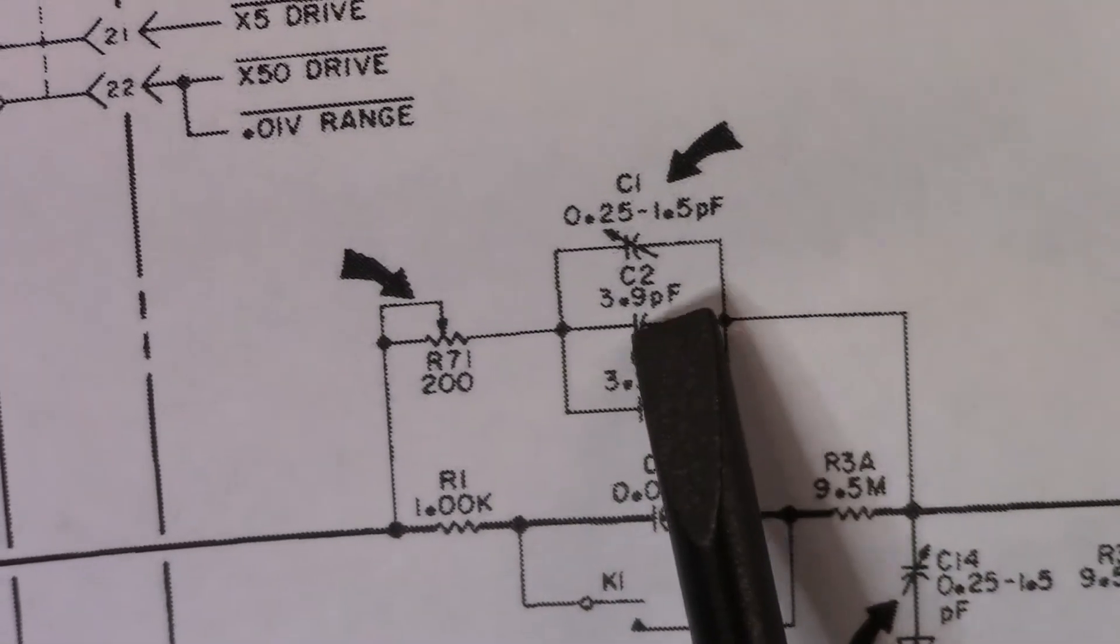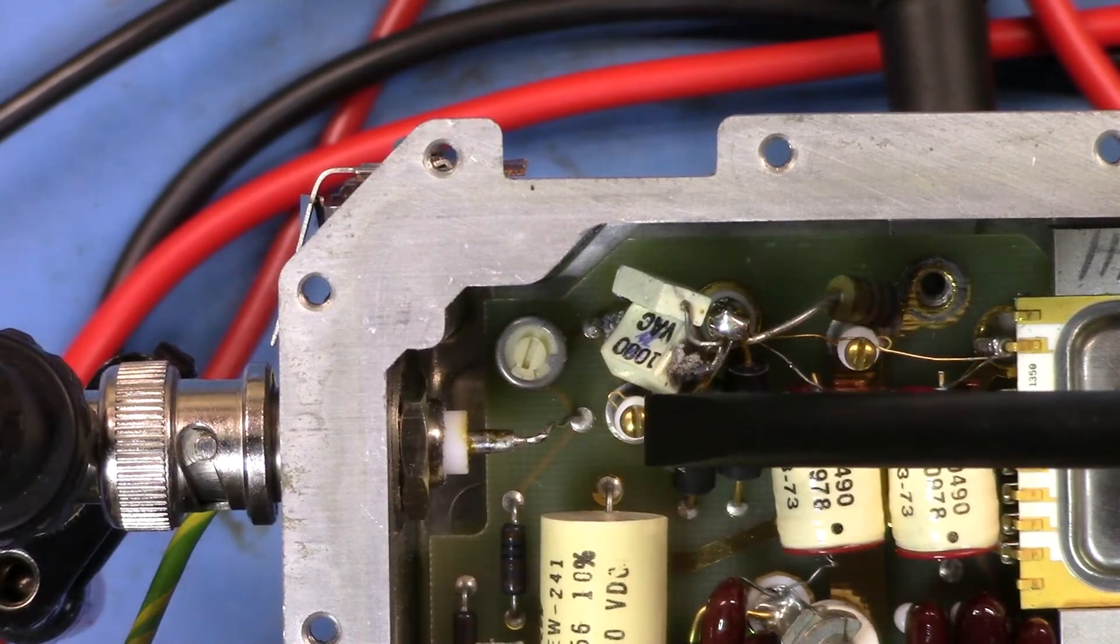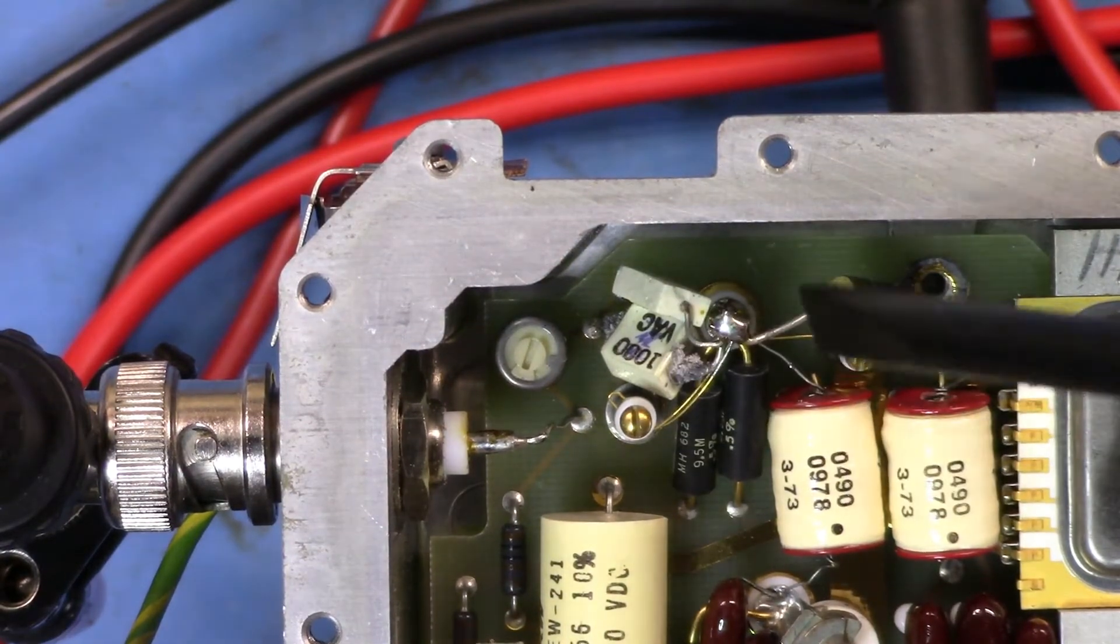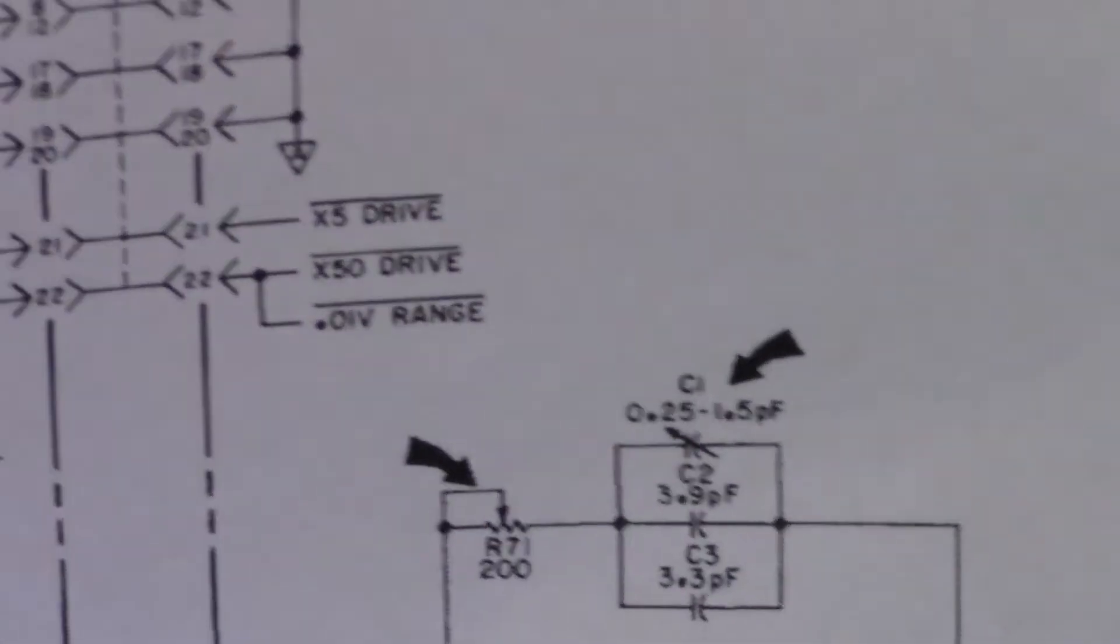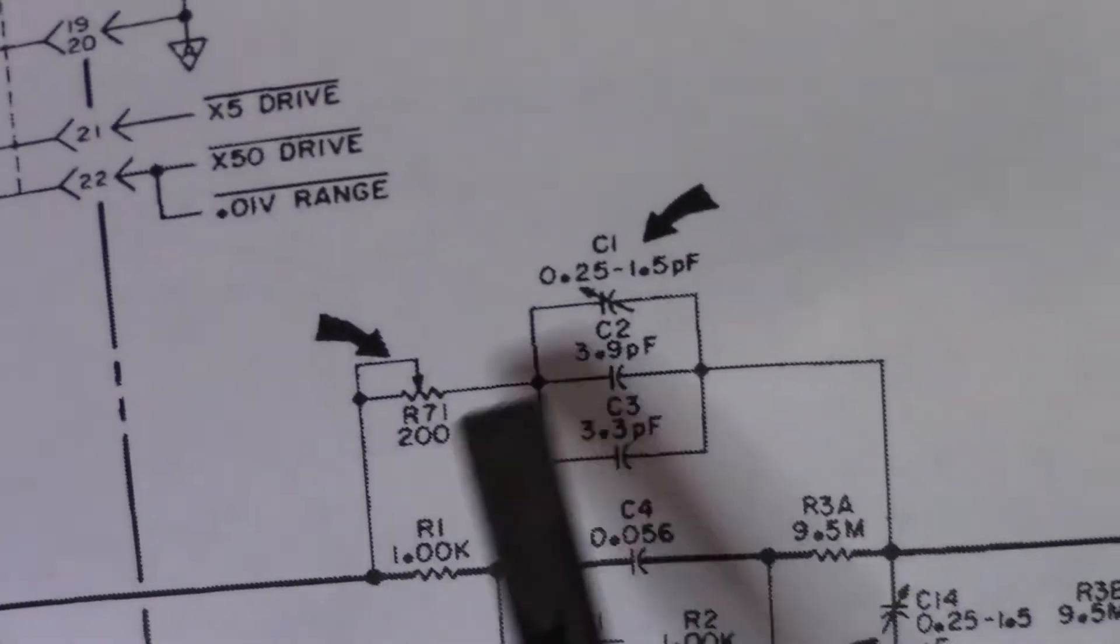And if C2, which I think that one is, because if you look at it, that's C1, that's going to be C2, that's going to be C3. So if that's C2, if that's died and effectively just become a little resistor...